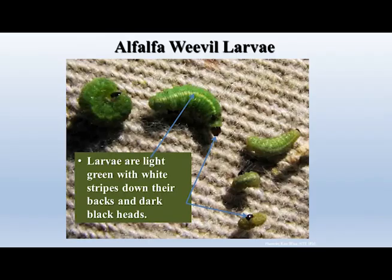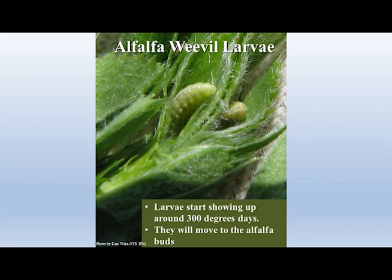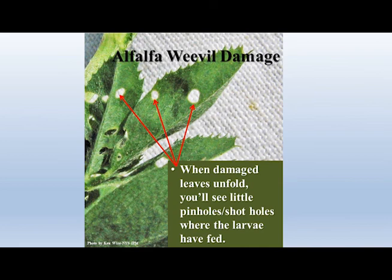Alfalfa weevil larvae are light green with a white stripe running down their back and dark black heads. Larvae start to appear at about 300 degree days using a base temperature of 48°F and move directly into the buds of the alfalfa. When they are small they drill through the bud, leaving what appears as shot holes in the leaflets.